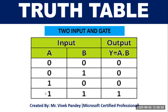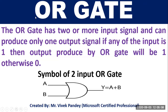What is an OR gate? The OR gate has two or more input signals and can produce only one output signal. If any of the inputs is one, then the output produced by the OR gate will be one; otherwise zero.